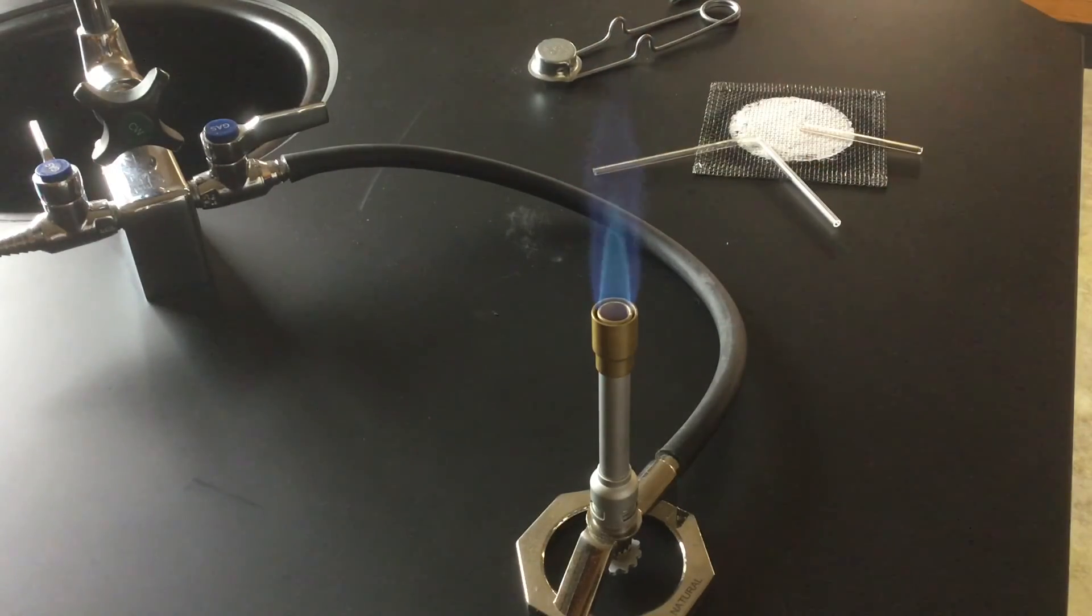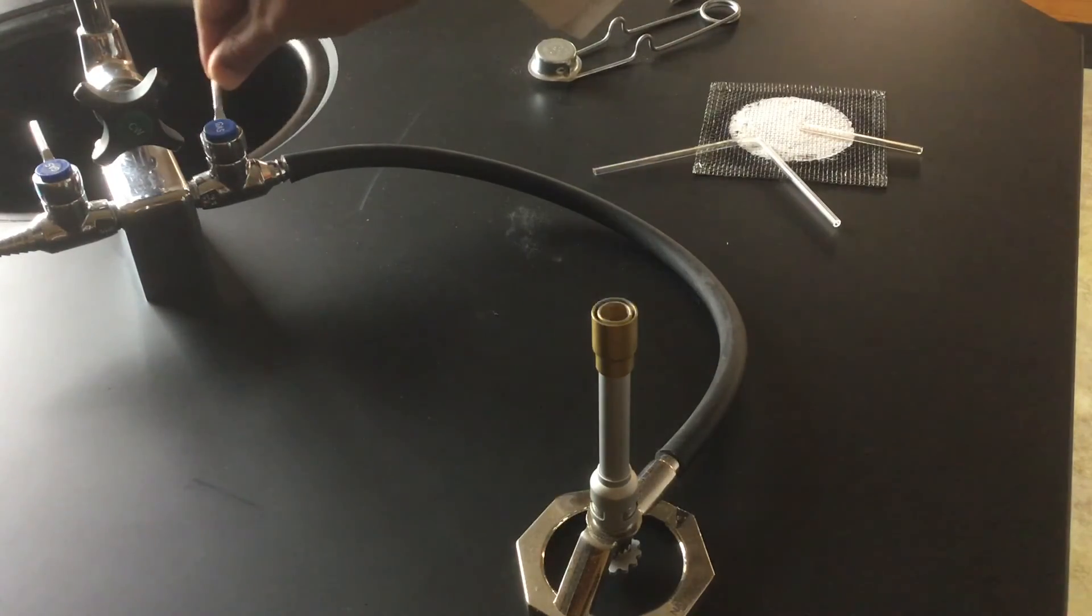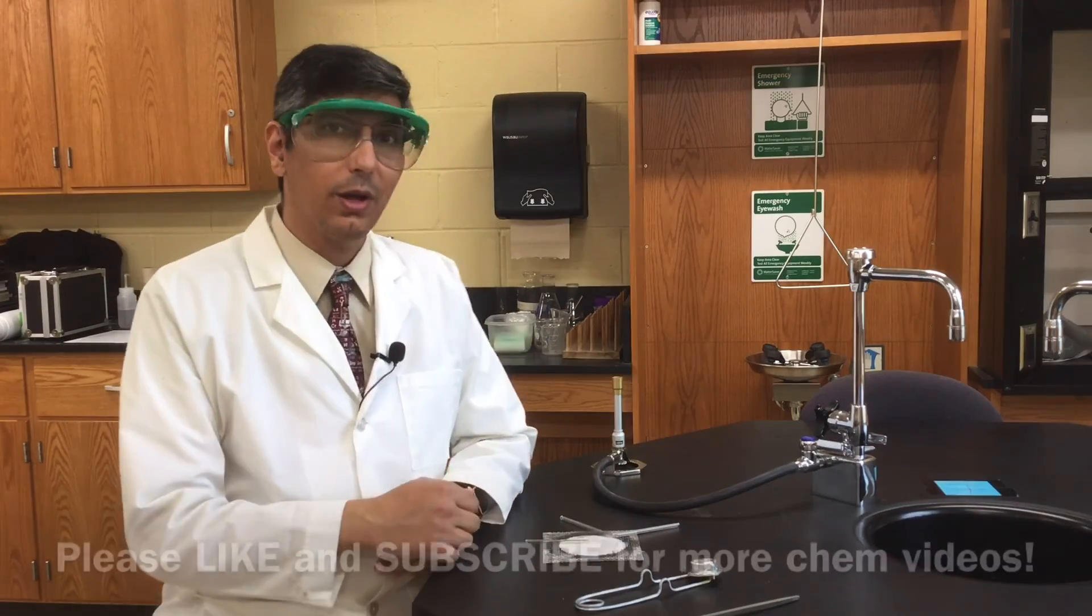When you're finished bending and cutting and fire polishing your glass, you can turn off the Bunsen burner flame right here at the jet. And that's it. That's how to fire polish glass and bend glass using a Bunsen burner or sometimes as we call it a Terrell burner.